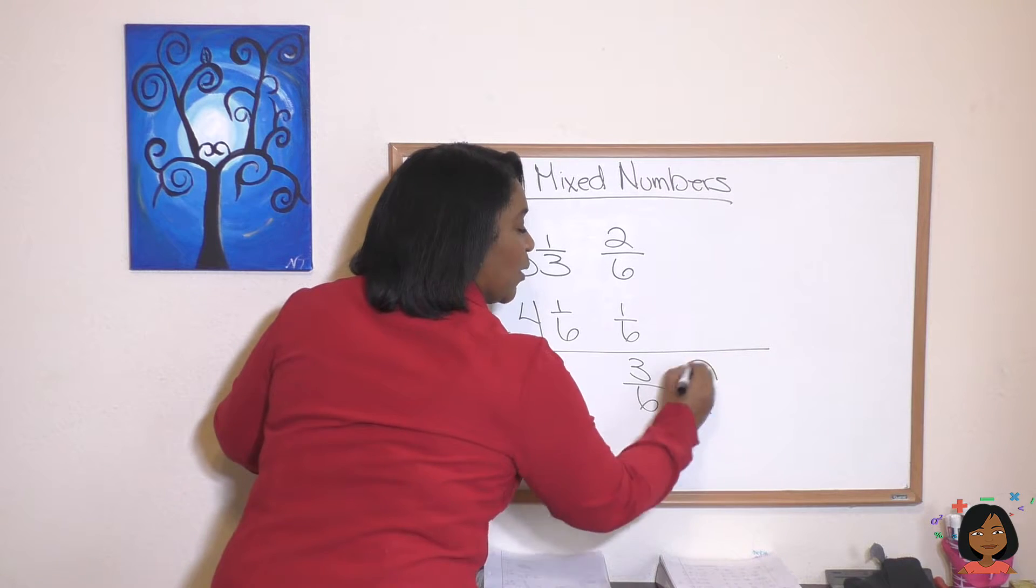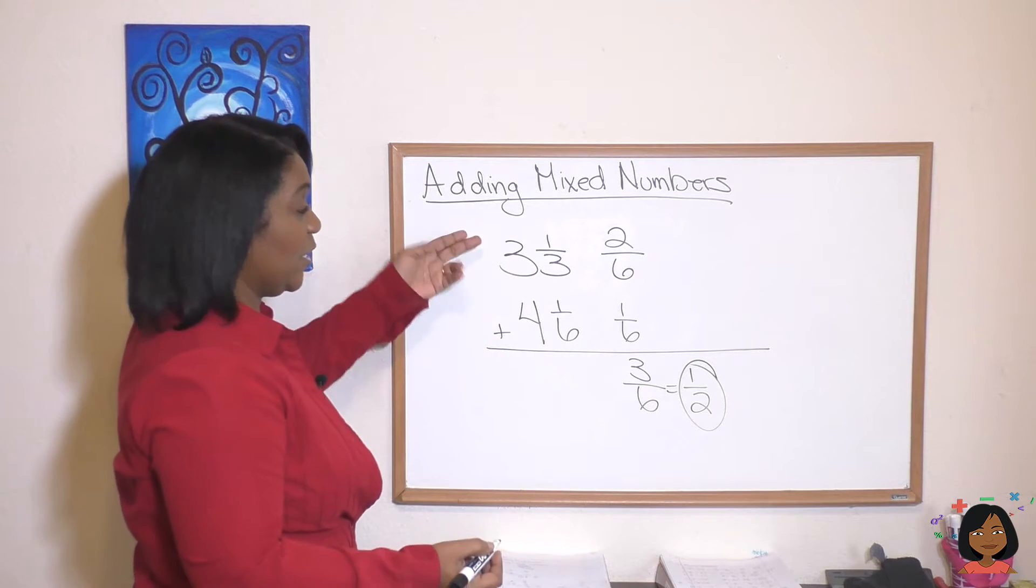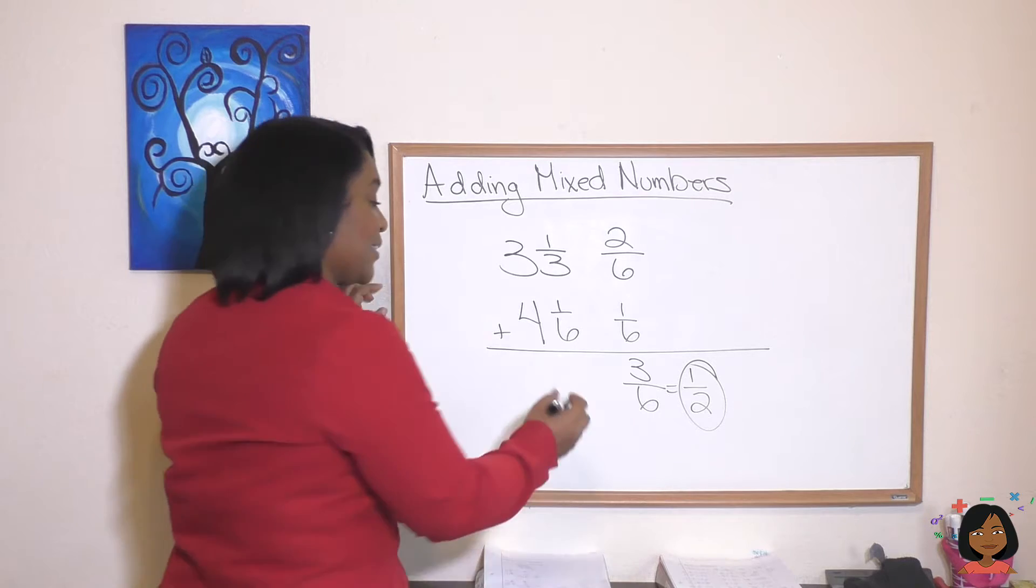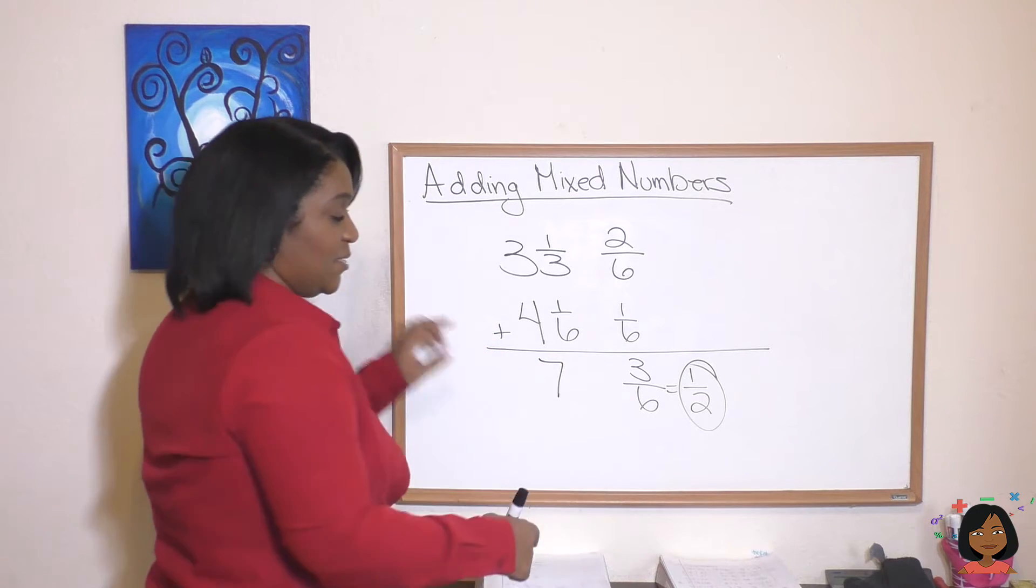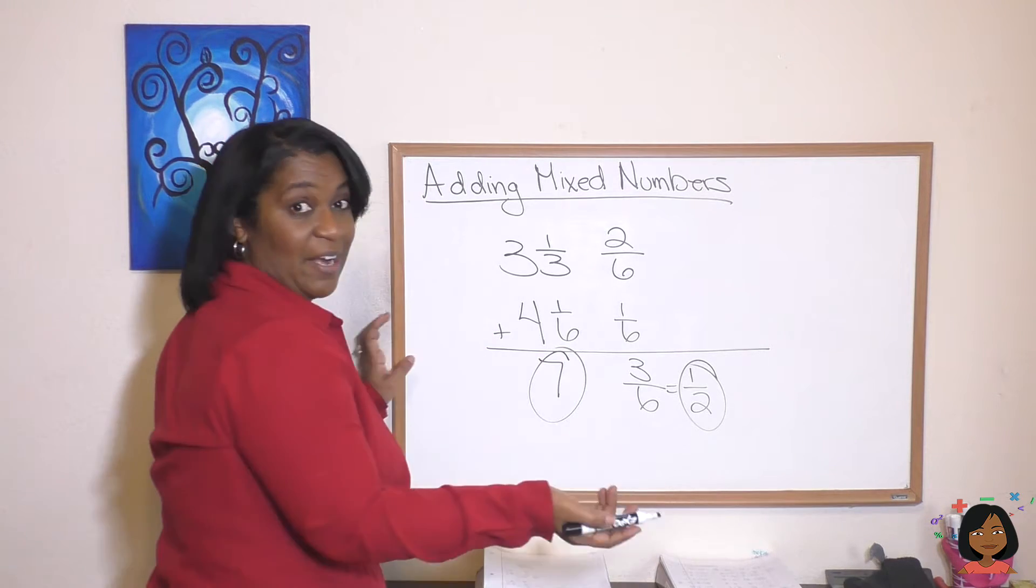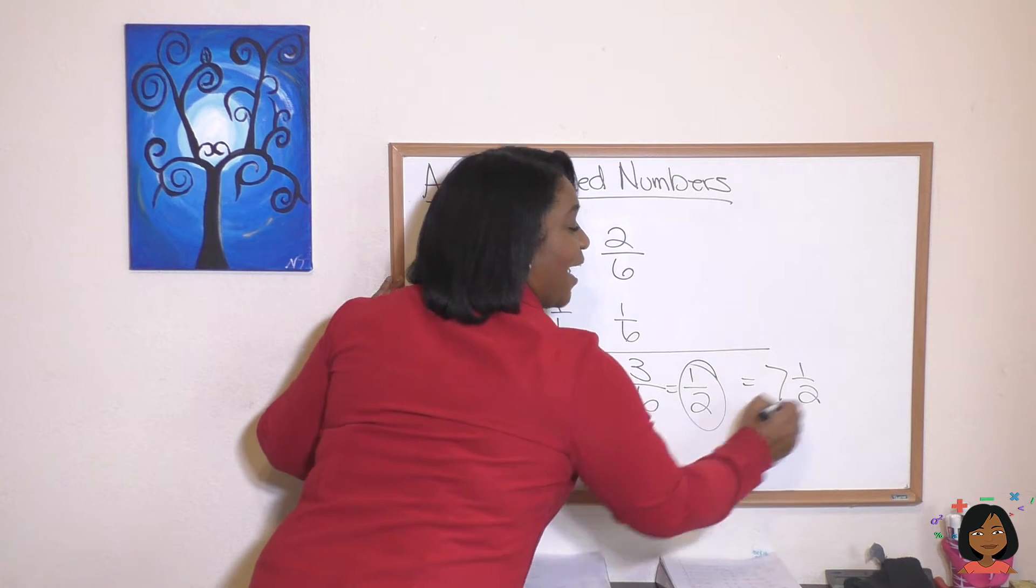But we're not done, are we? We haven't handled our whole numbers yet. We can simply just go three plus four and get seven. And that means put these two together. Our answer is 7 1/2.